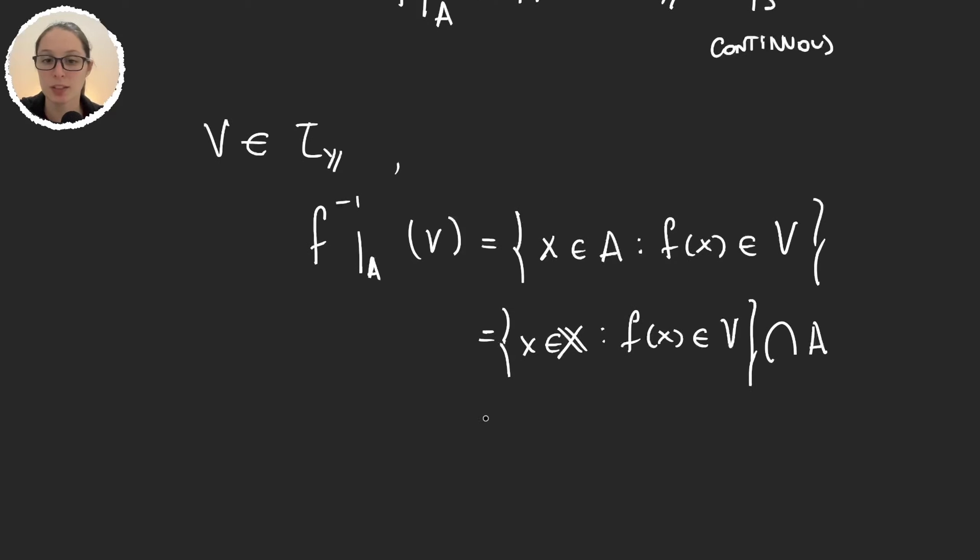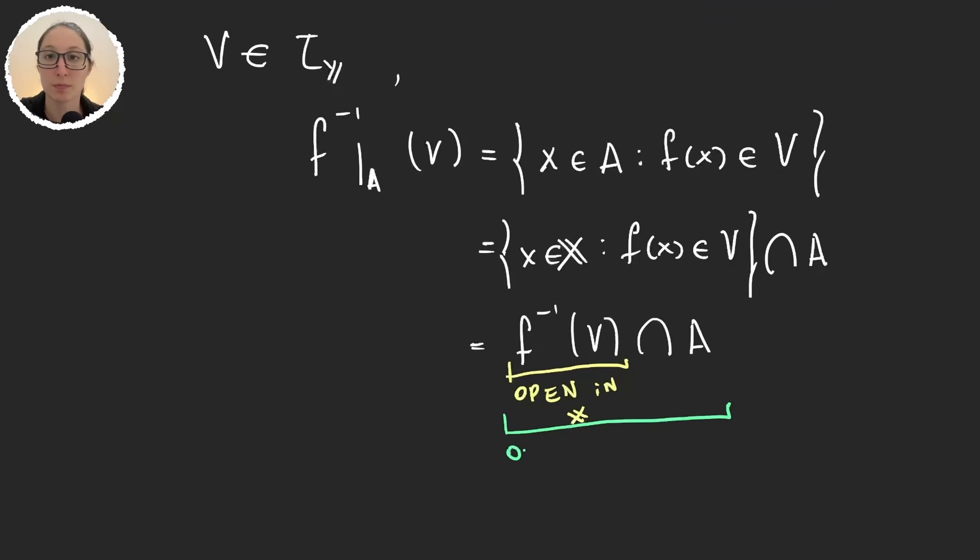But now this first set is the preimage of b through f, and then intersection a. So because f was continuous, this is open in x, and so this intersection is an open set in a with the subspace topology.